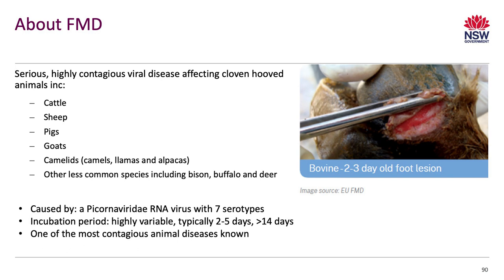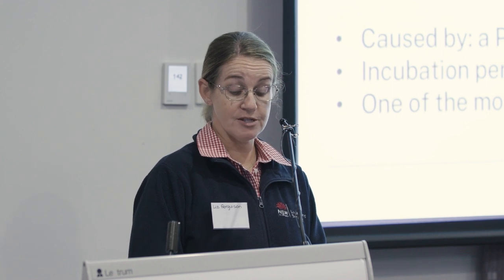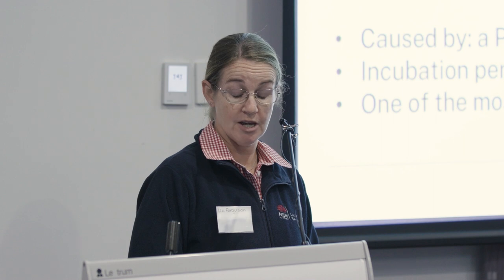The primary mode of transmission is by direct contact, fomites, movement of animals, or windborne spread. It can remain viable in the environment for weeks or even longer. It's highly susceptible to both acid and alkaline disinfectants — which is why we've stocked up on citric acid for our decontamination kits, as that change in pH inactivates the virus. It can survive in frozen, chilled, and freeze-dried foods including meat and dairy, which is the biggest concern for Australia — imported products being fed to pigs, which are amplifiers of the virus shedding about three times as many viral particles as an infected cow.